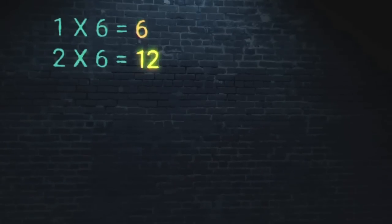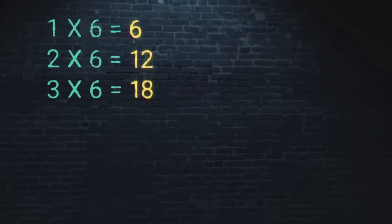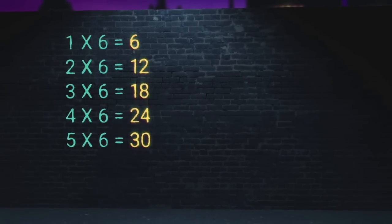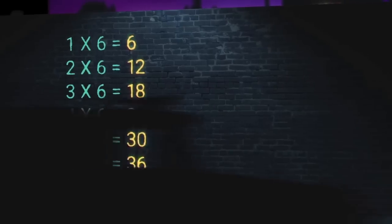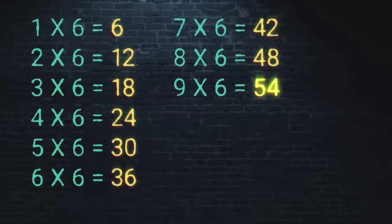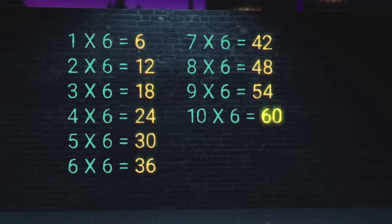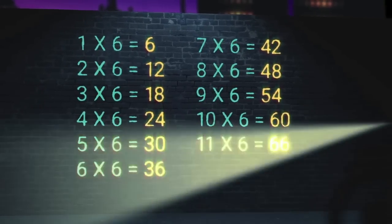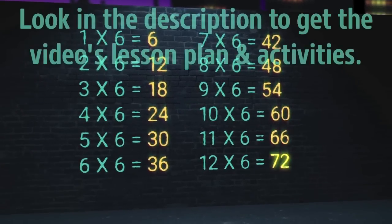1 times 6 is 6, 2 times 6 is 12, 3 times 6 is 18, 4 times 6 is 24, 5 times 6 is 30, 6 times 6 is 36, 7 times 6 is 42, 8 times 6 is 48, 9 times 6 is 54, 10 times 6 is 60, 11 times 6 is 66, 12 times 6 is 72.